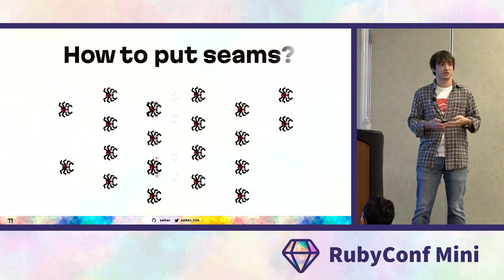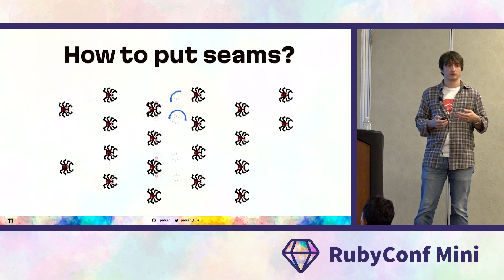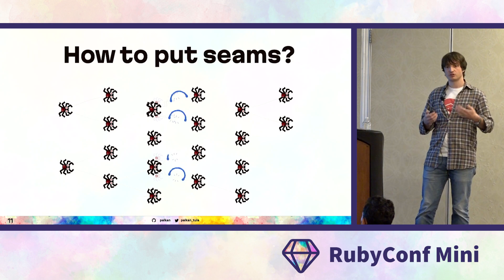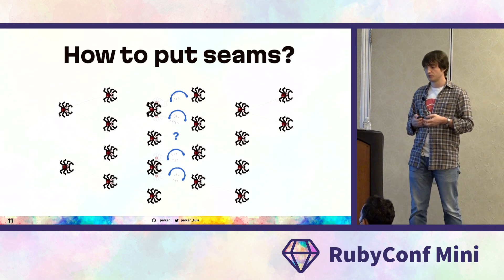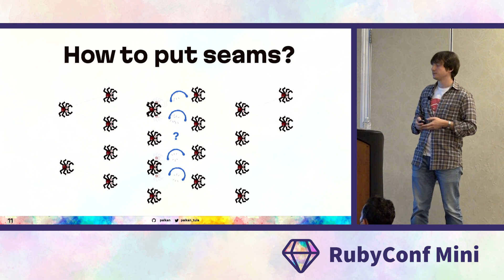The topic of this talk is how to avoid false positives when using mocks, even in a mixed-style codebase. Or in other words, how to put seams in our communication graph to make it comply with reality.